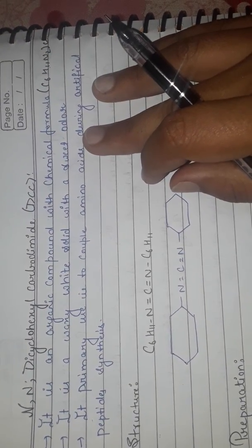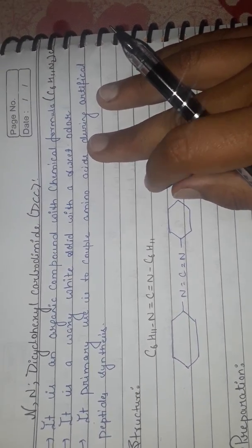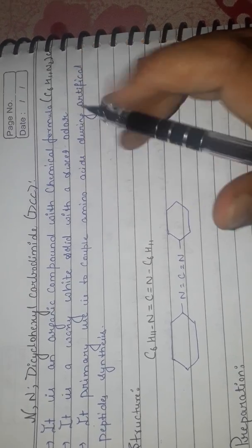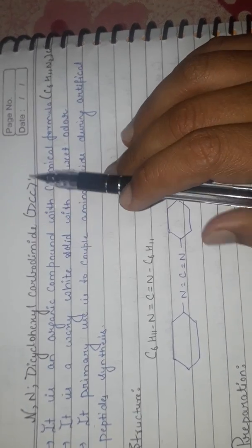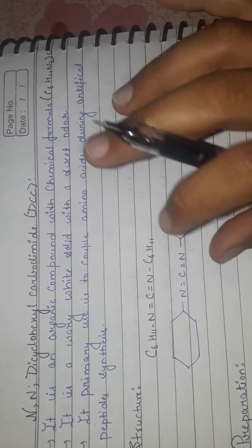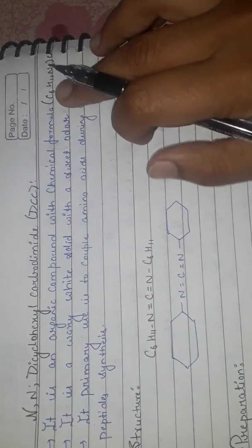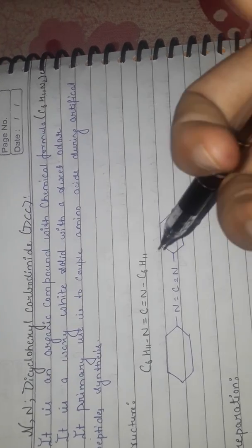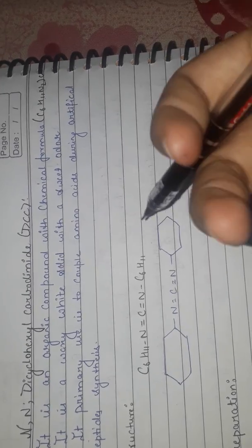Hello everyone, welcome to MSC Chemistry. Today's topic is DCC, which is N,N'-dicyclohexyl carbodiimide. It is an organic compound with chemical formula C6H11N2. It is a waxy (thick) white solid with a sweet odor.